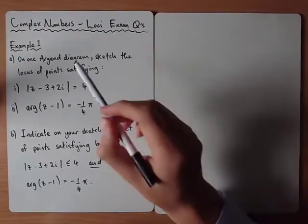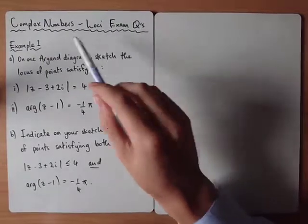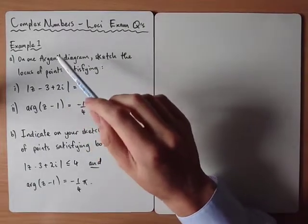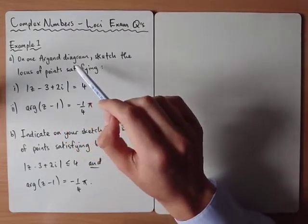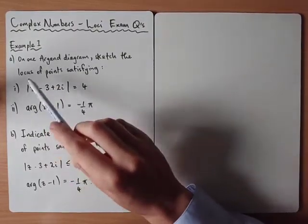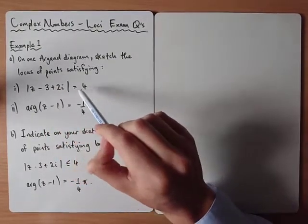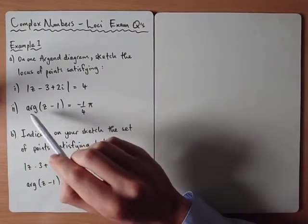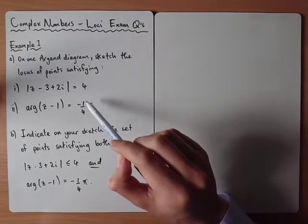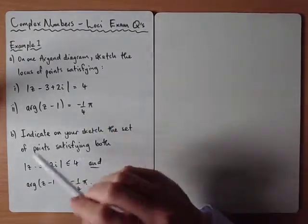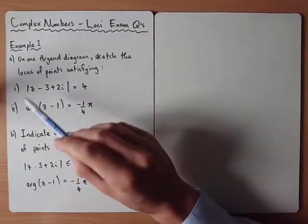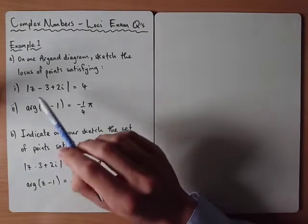In this video we're going to take a look at a couple of exam style questions using complex numbers and loci on the Argand diagram. Example 1 says: on one Argand diagram, sketch the locus of points satisfying the modulus of z minus 3 plus 2i equals 4, and the argument of z minus 1 is equal to minus a quarter of pi. For now let's just focus on how we would sketch these two loci problems.